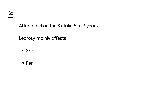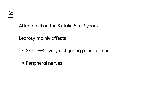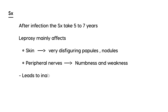Leprosy begins by affecting mainly two parts of the body: the skin and the peripheral nerves. The skin infection results in very disfiguring types of papules and nodules, which can disfigure the face or other infected parts of the body. Involvement of the peripheral nerves leads to numbness and weakness initially.